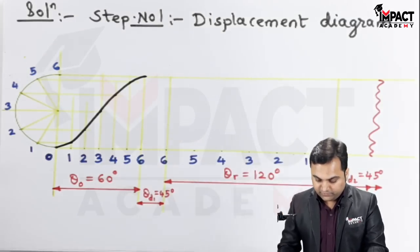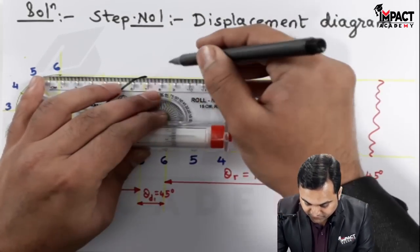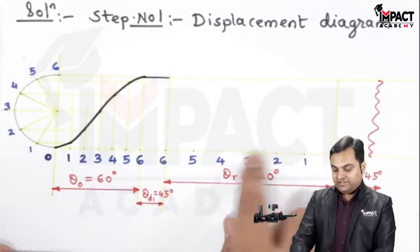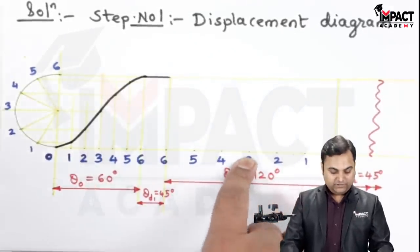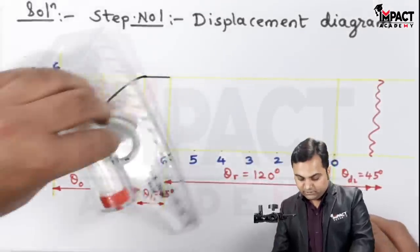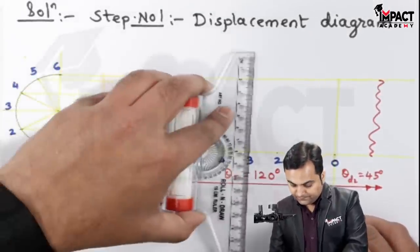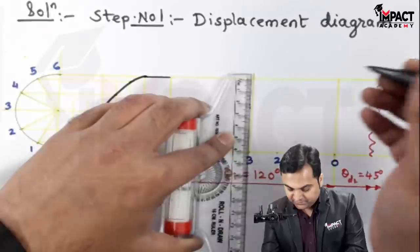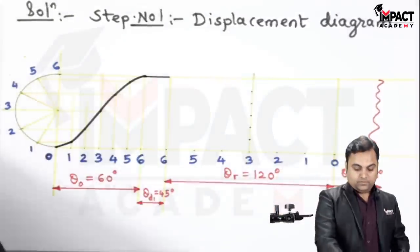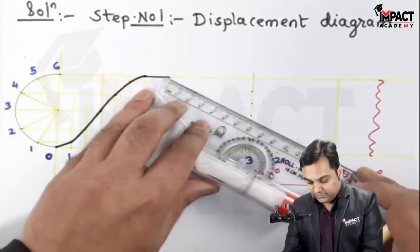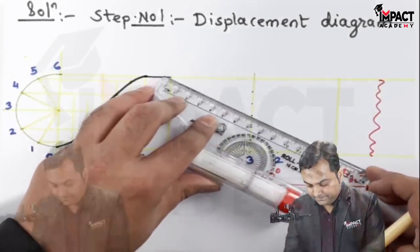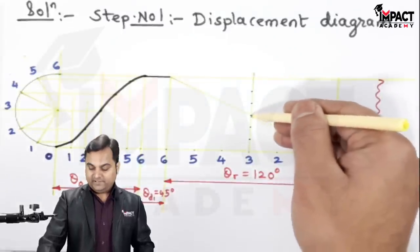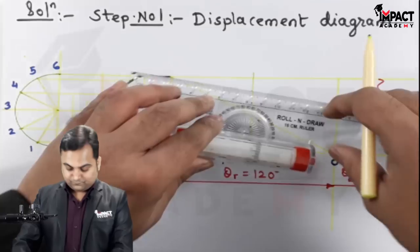After the outstroke, there is a dwell so the follower remains at its top position for 45 degrees. Then there is uniform acceleration and retardation during the return stroke. For that, take the midpoint of the return stroke — which is point number 3 — and draw a light vertical line. Divide this vertical line into 6 equal divisions; since it is 6 cm, take 1 cm divisions. Then join the diagonal from the midpoint for the return stroke.